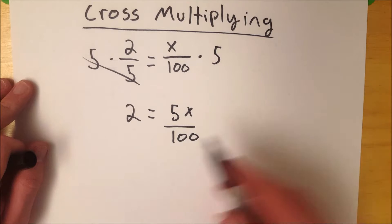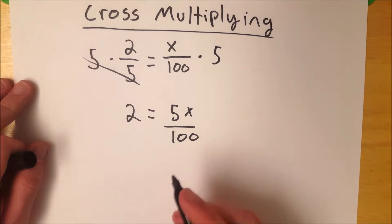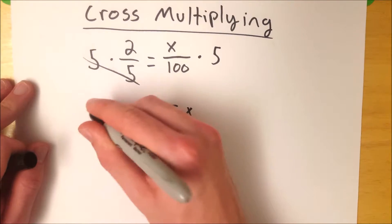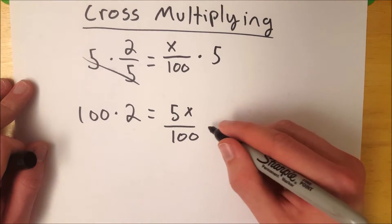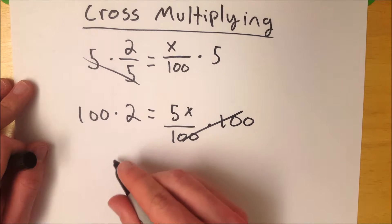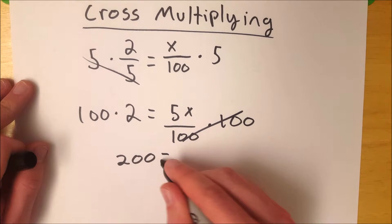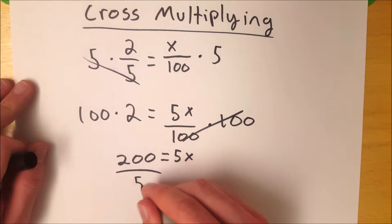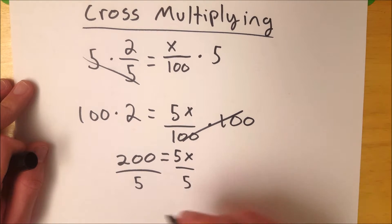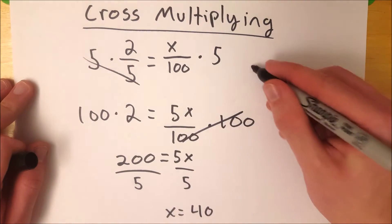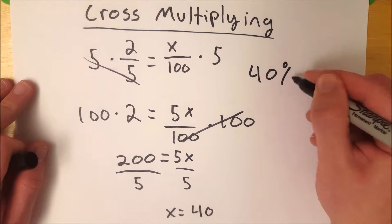Now we're going to multiply both sides of the equation by 100 in order to eliminate this denominator. So we get 100 times 2, and 5x over 100 times 100. The 100's cancel out, and we're left with 200 equals 5x. Then we just divide both sides by 5, and we are left with x equals 40.